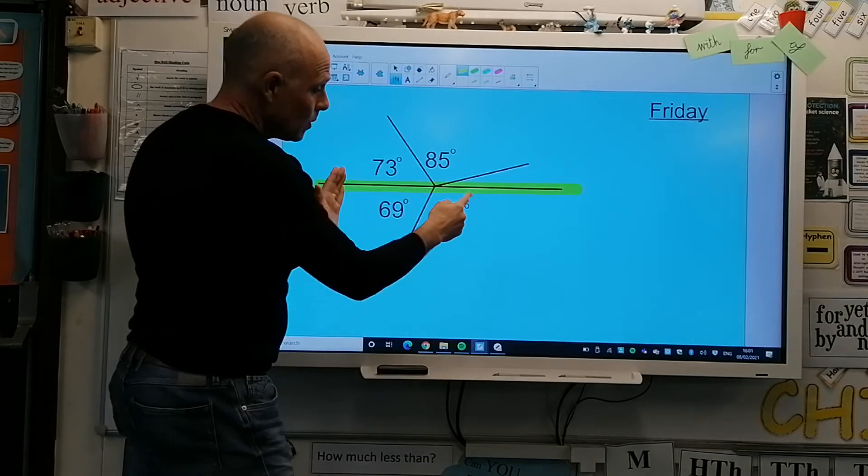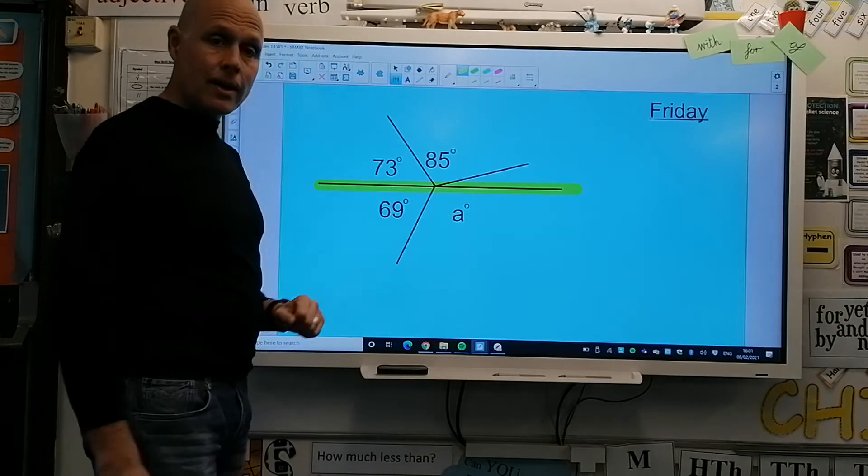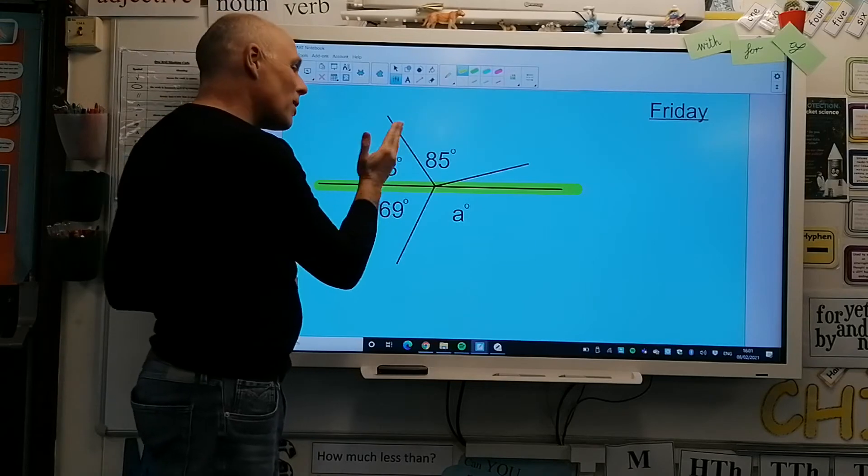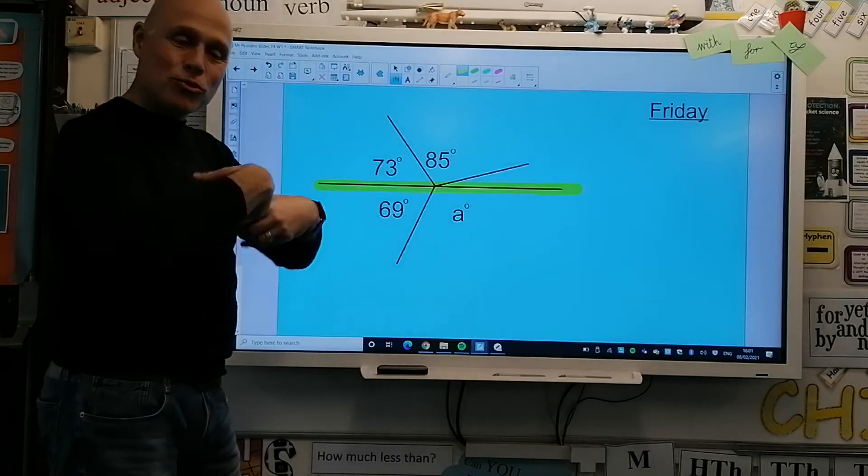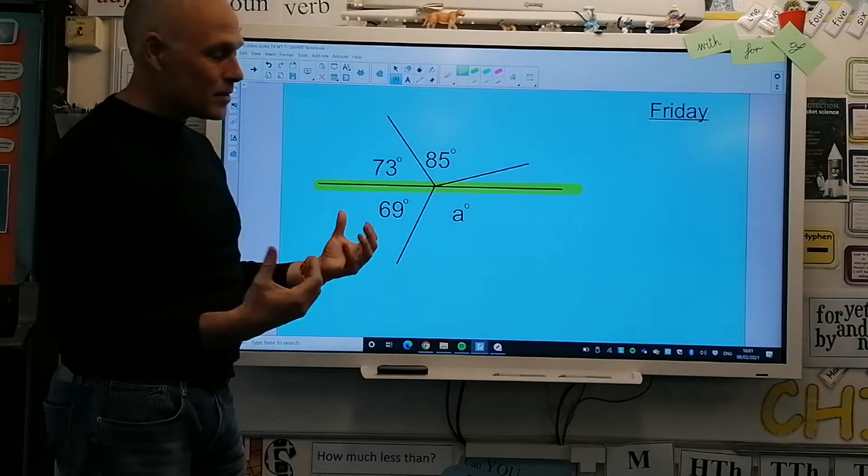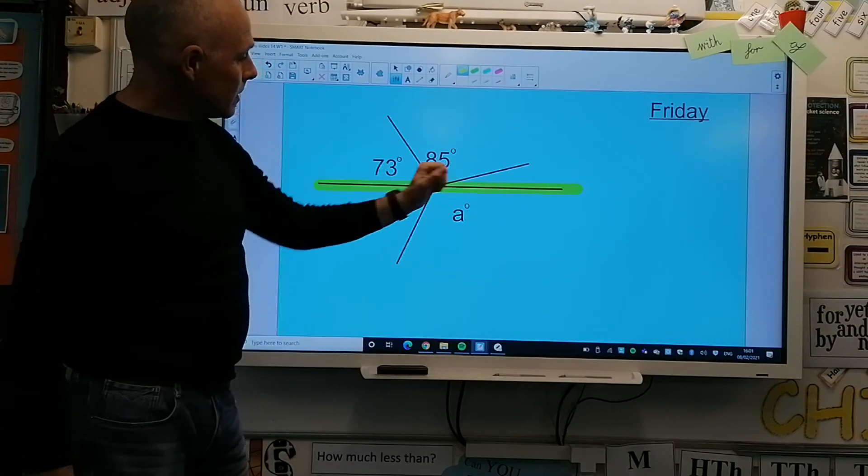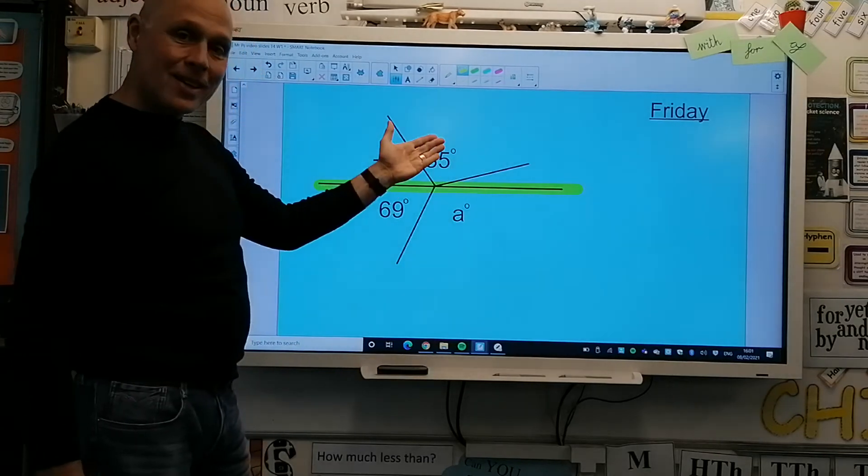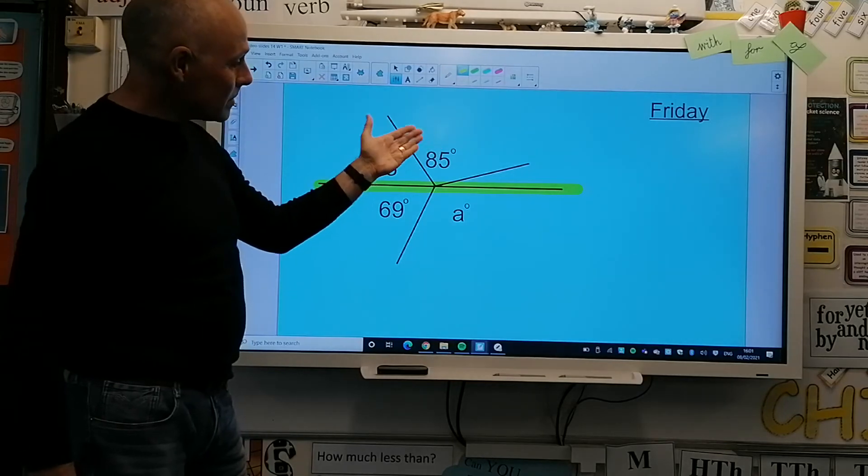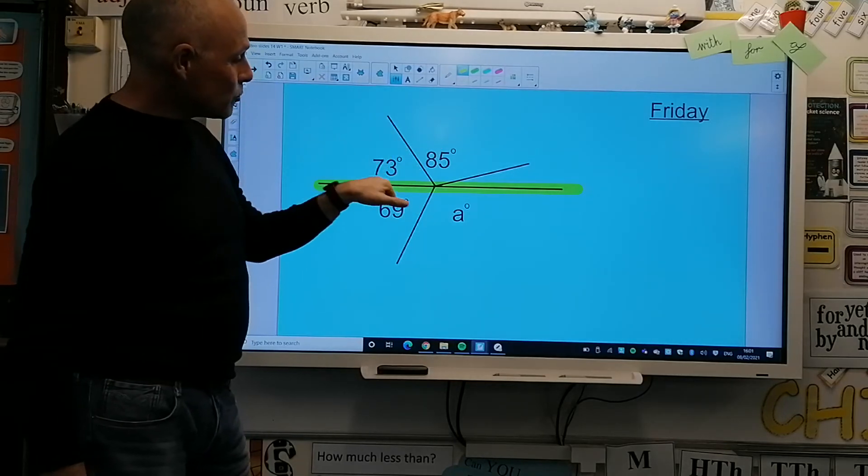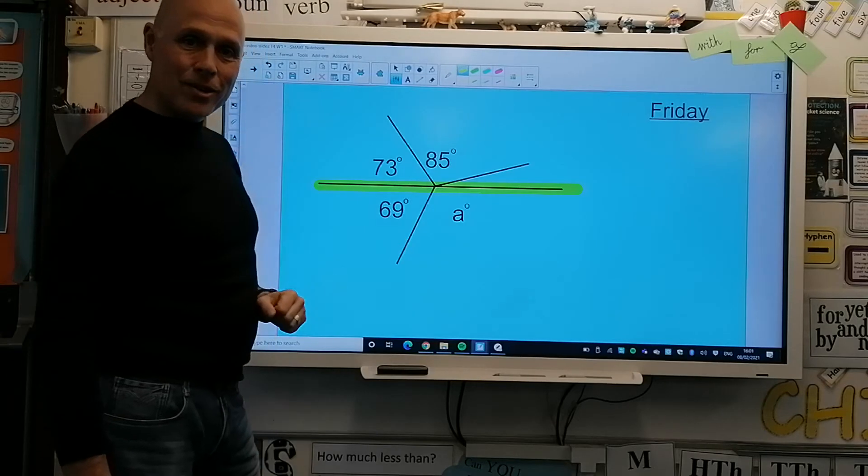69 will give you that angle, angle a. So you don't need to worry about adding all those up and subtracting them from something. Likewise, if you were to find that angle, you've got 73 degrees and 85 degrees, add them together and subtract them from 180 degrees.